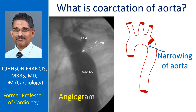Occasionally it can occur before the origin of the blood vessel to the left arm as well. In the typical situation, when the narrowing is beyond the origin of the blood vessel to the left arm, blood pressure in the upper limbs is much higher than in the lower limbs.